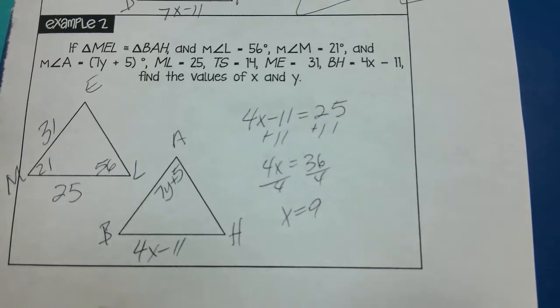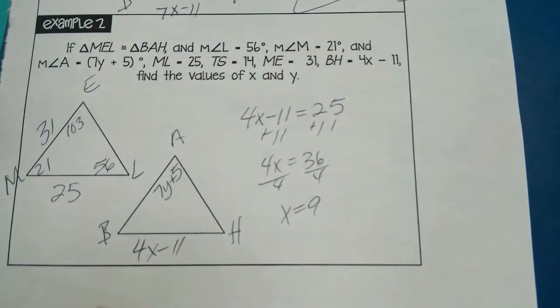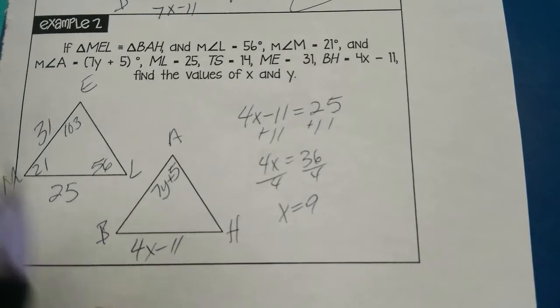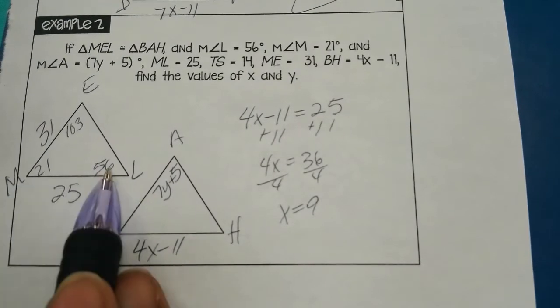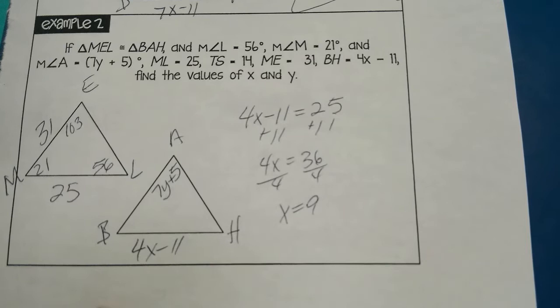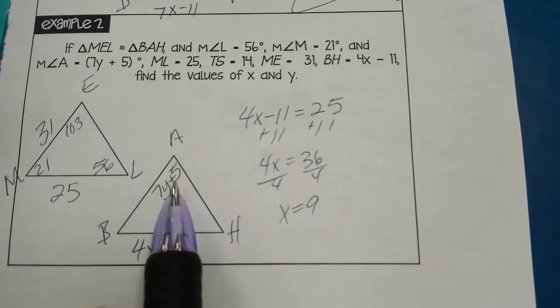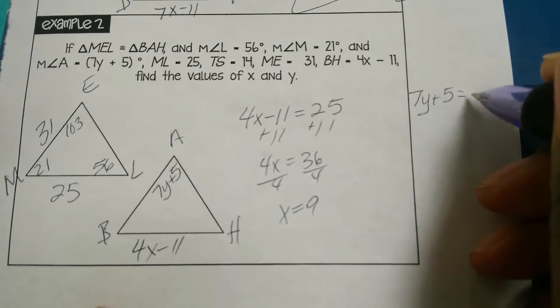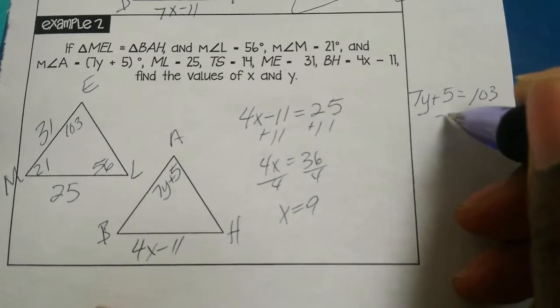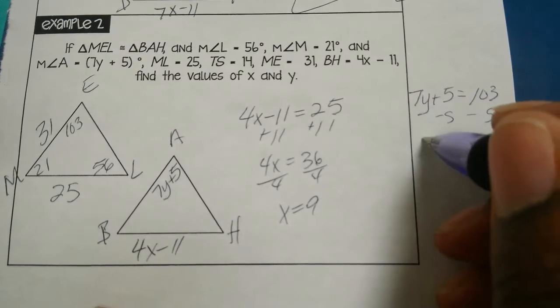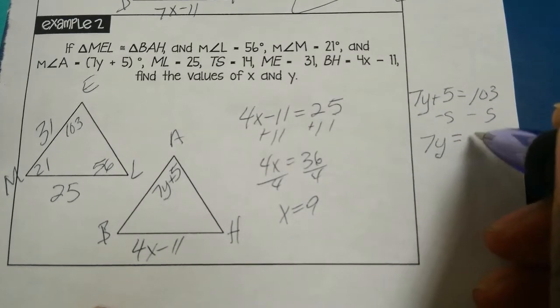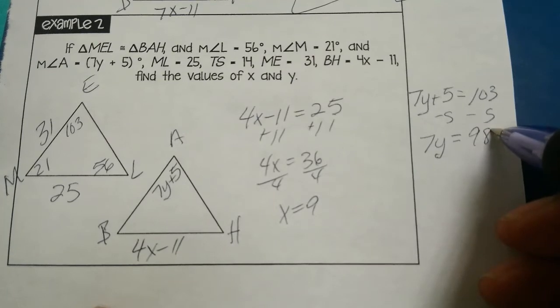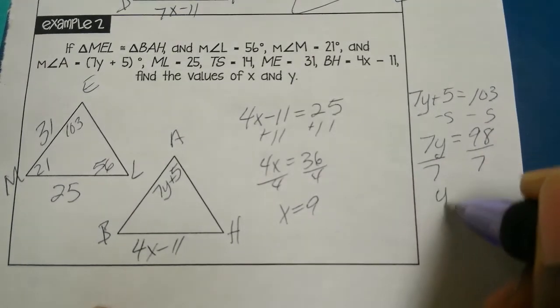Again, how did I get that? I added these two numbers together and subtracted it from 180. That tells me it's 103. So if angle E is 103, then I know that angle A has to be equal to that. So I have 7y plus 5 equals 103. Subtract 5 from both sides: 7y equals 98. Divide by 7: y equals 14.